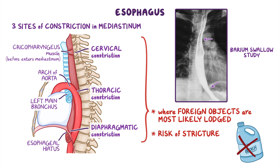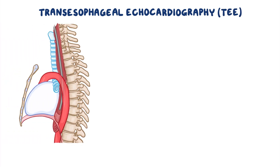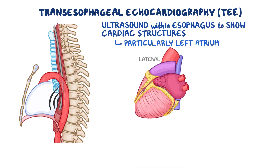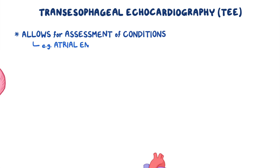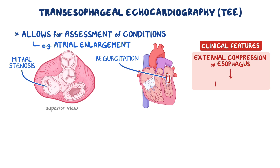Even though we try to prevent foreign objects going into our esophagus, one thing we are okay with is the use of transesophageal echocardiography, or TEE for short. TEE is a device which uses ultrasound within the esophagus to show images of the cardiac structures, particularly the left atrium which makes up the majority of the posterior heart and is directly anterior to the esophagus. In addition to the left atrium, TEE can visualize the atrial septum and mitral valve. TEE allows for assessment of conditions such as atrial enlargement due to mitral stenosis or regurgitation, which is important as severe enough left atrial enlargement can cause external compression on the esophagus leading to dysphagia.